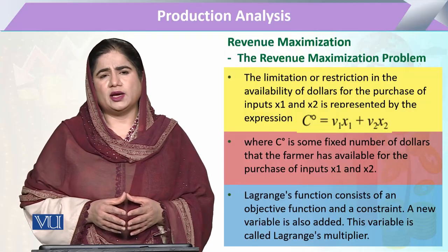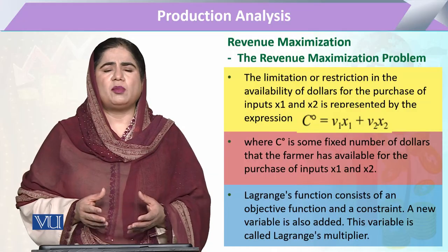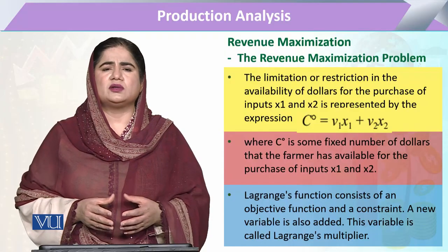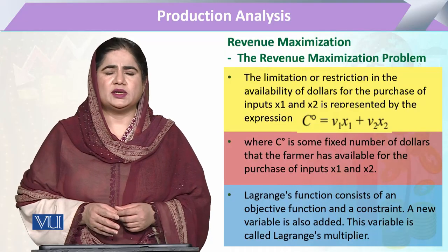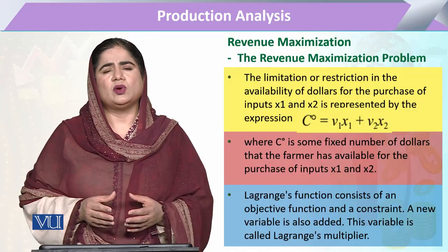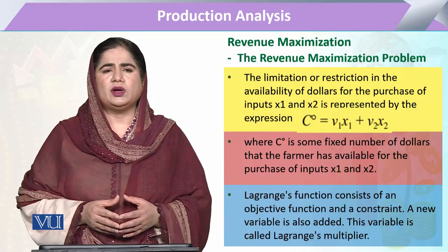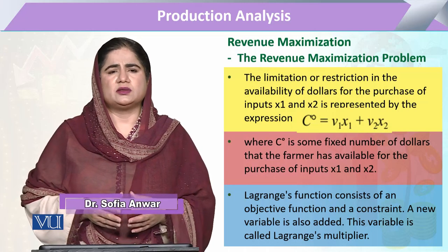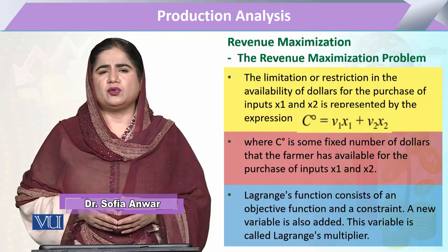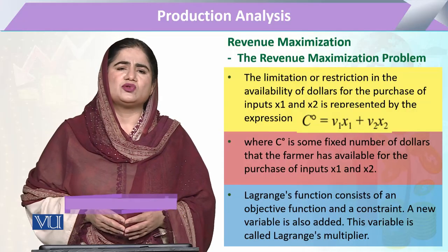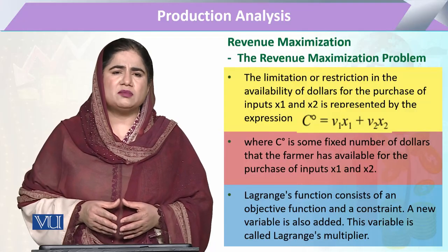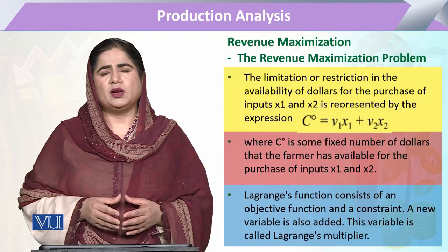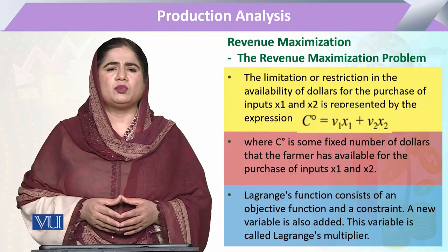What is the constraint of a producer? It is because he or she has a certain given amount of resources. That given amount of resources, in rupees, dollars, euro — whatever available budget is available — is the amount that has to be used in the cost of the firm. From that budget, the producer has to purchase various amounts of input. So for the maximization of revenue, keeping in view the constraint which is the available cost, we have to see how the problem is solved.